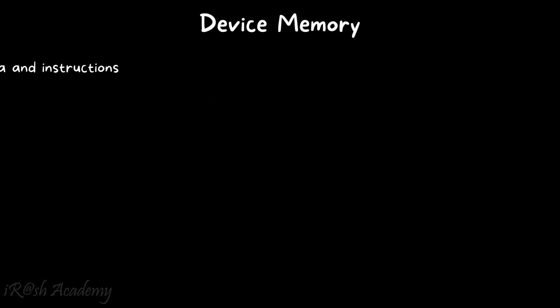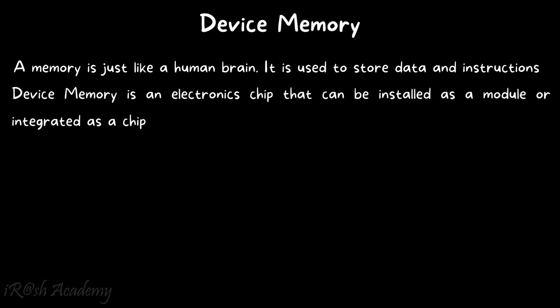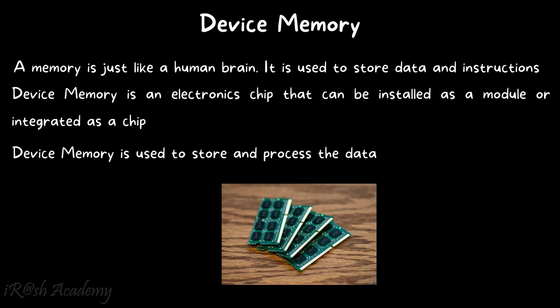A memory is just like a human brain — it is used to store data and instructions. A device memory is an electronic chip that can be installed as a module or integrated as a chip, and it is used to store and process data. Depending on the operating system and programs installed, a computer needs a specific amount of memory.